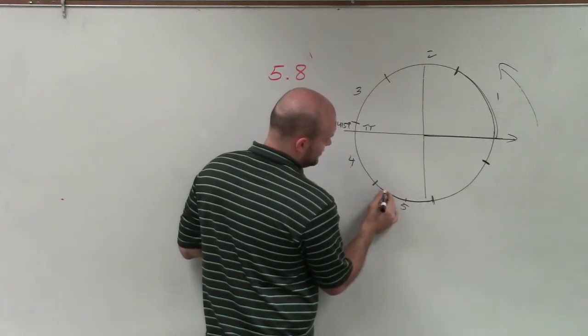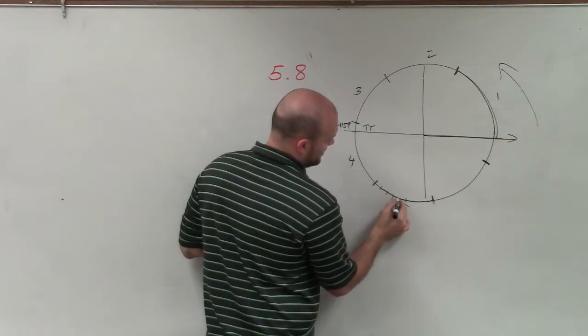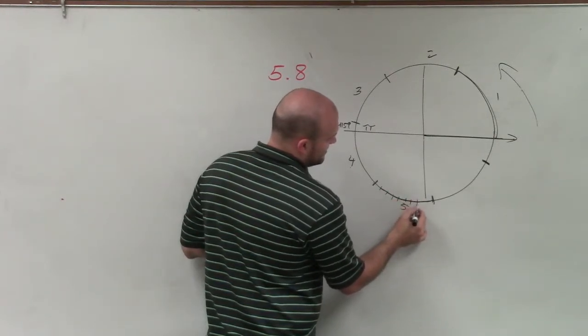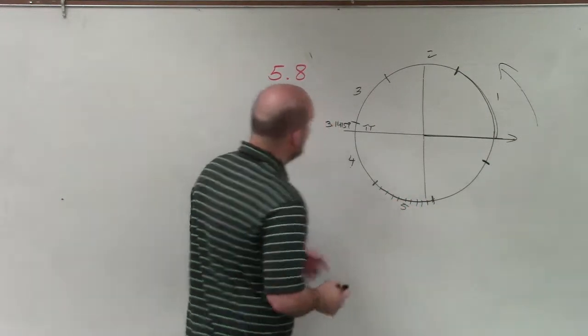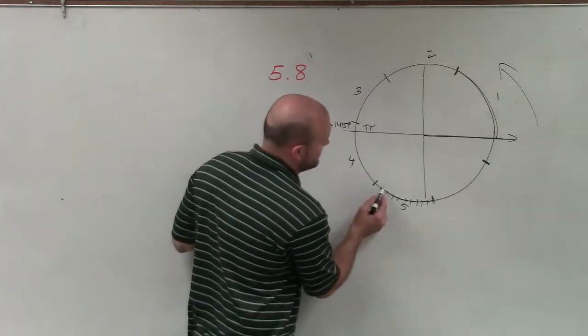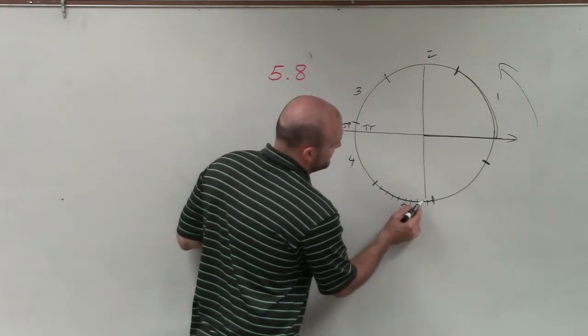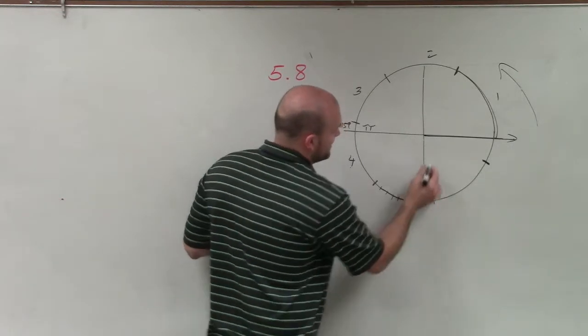So we're going to half, and then we'll do 1, 2, 3, 4, 5, 6, 7, 8, 9, 10. All right, so now it's broken up into tenths, so now I can just count eight of them. 1, 2, 3, 4, 5, 6, 7, 8. And that's going to be my ending value.